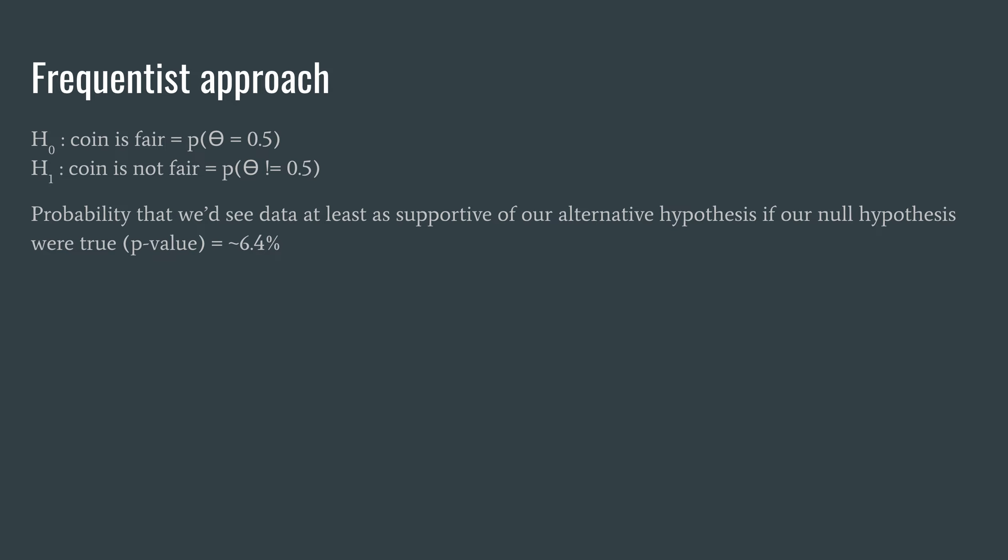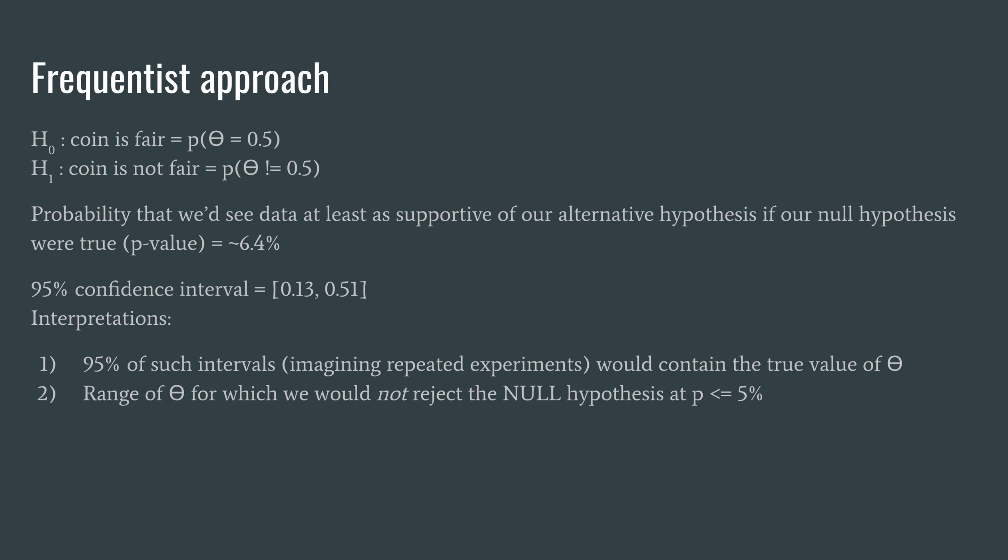We can also calculate a 95% confidence interval which in this case comes out to 0.13 to 0.51. And the interpretations of the confidence interval are 95% of such intervals would contain the true value of theta.